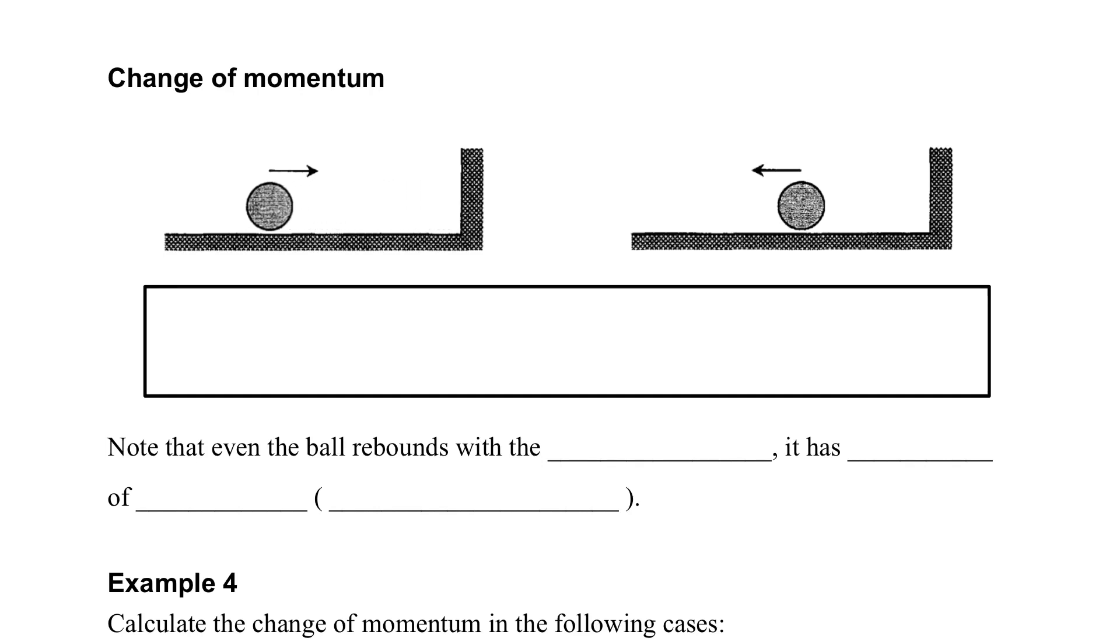So what is the change of momentum in this case? For example, if we take the initial velocity as u and then the final velocity as v, we will have different momentum. The initial momentum is mu which is in positive direction and the final momentum will be mv in negative direction.